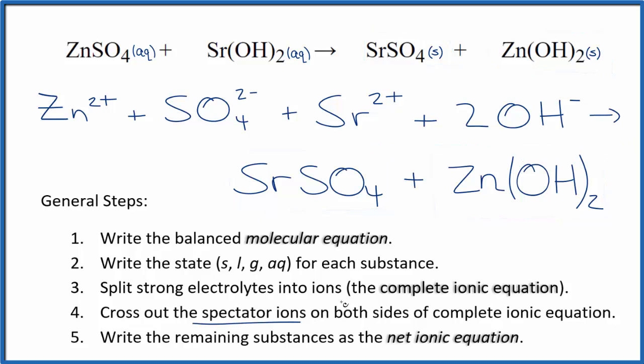Now we can cross out spectator ions. They're on both sides. The thing is, everything is unique on each side. There's nothing that's the same in the reactants and the products. Because of that, the complete ionic equation is the same as the net ionic equation.